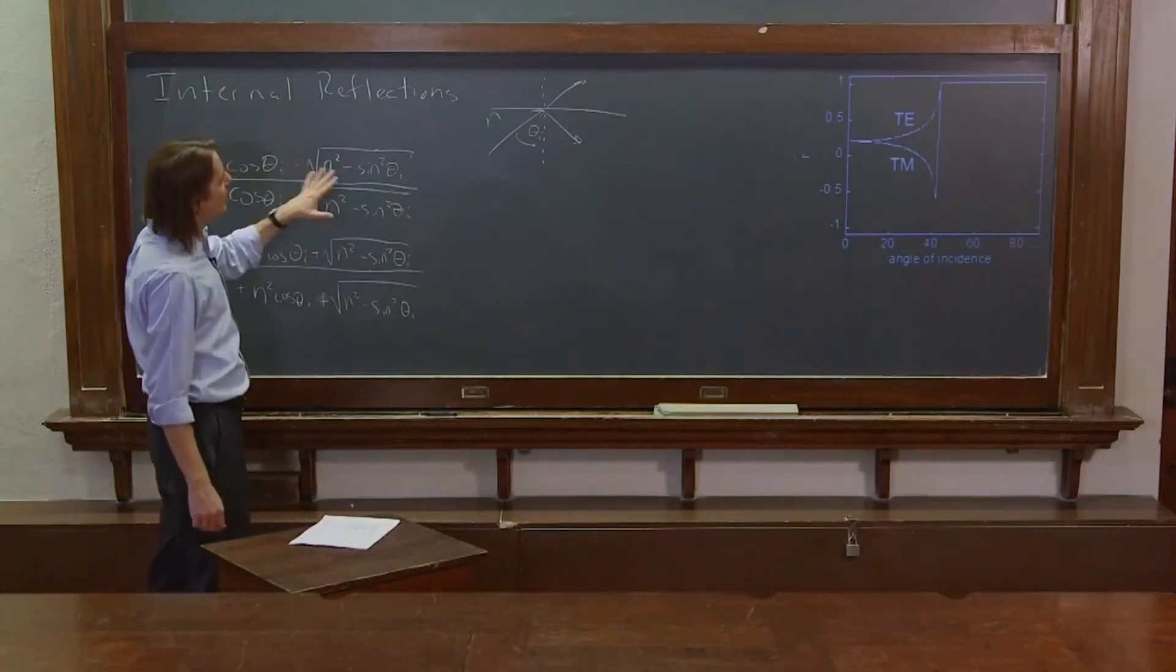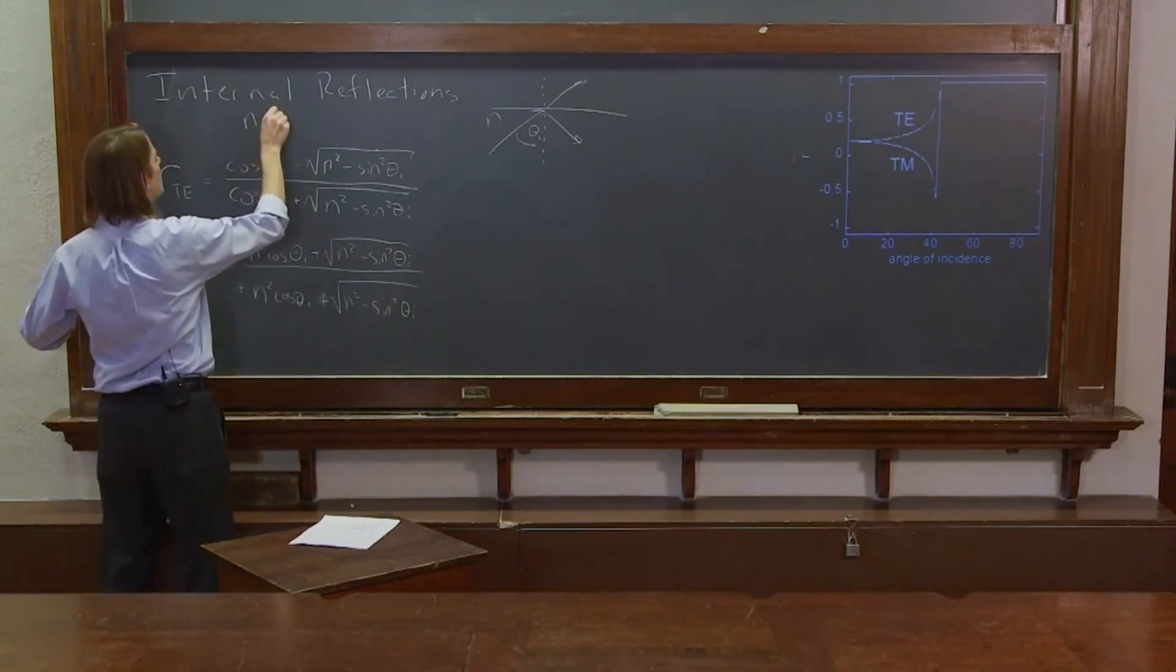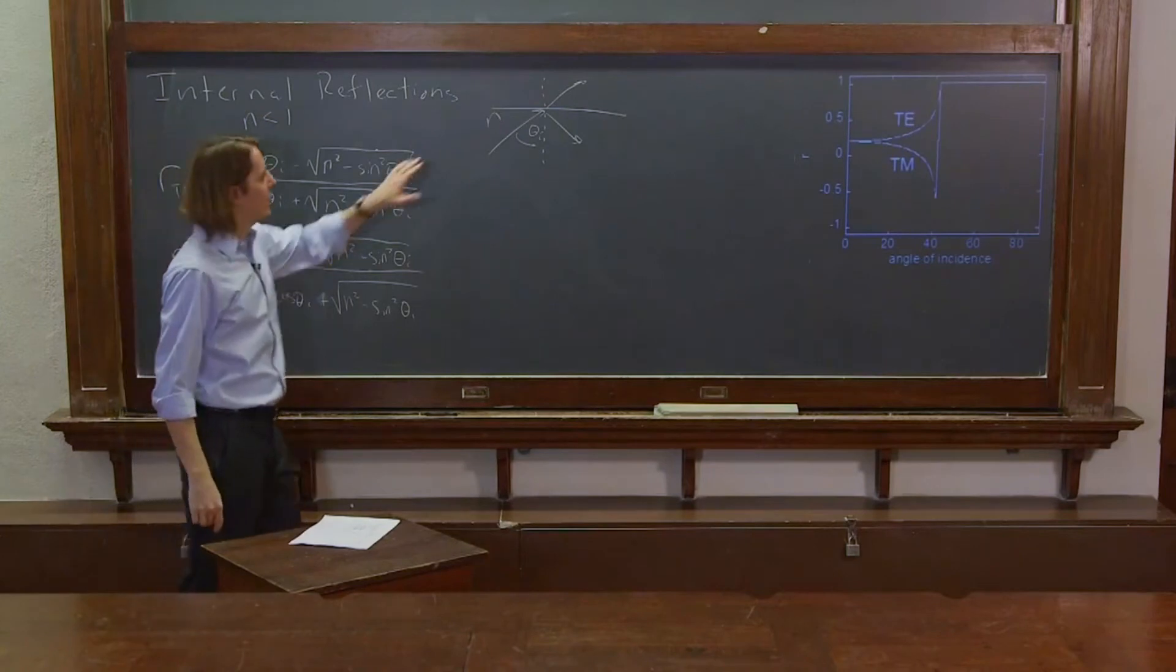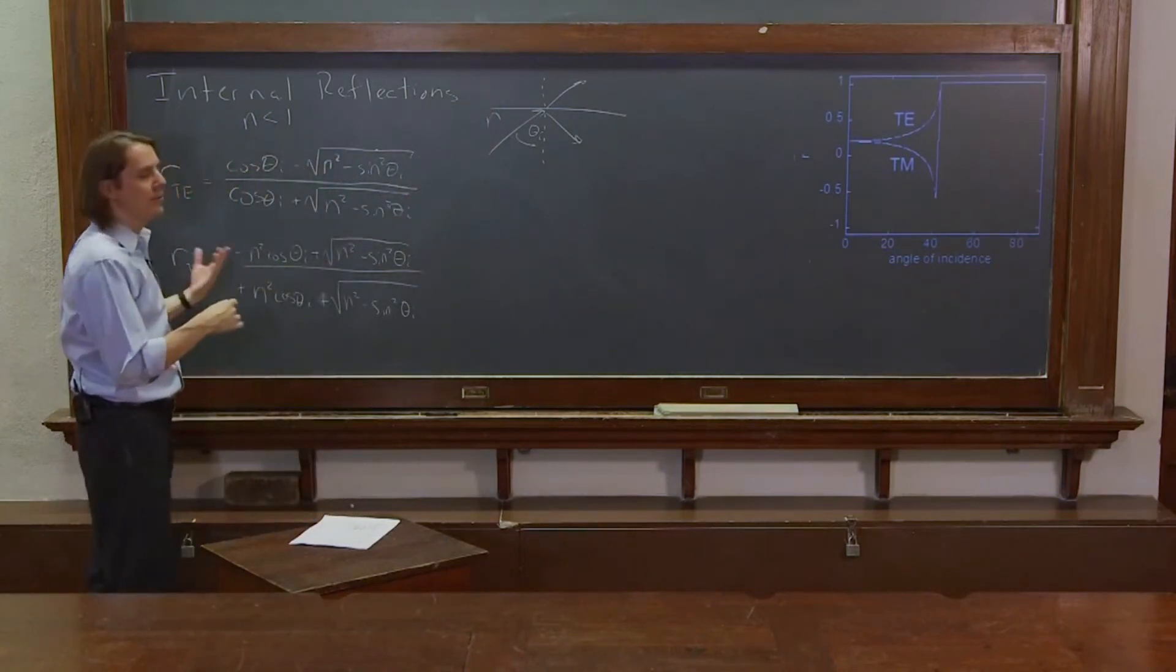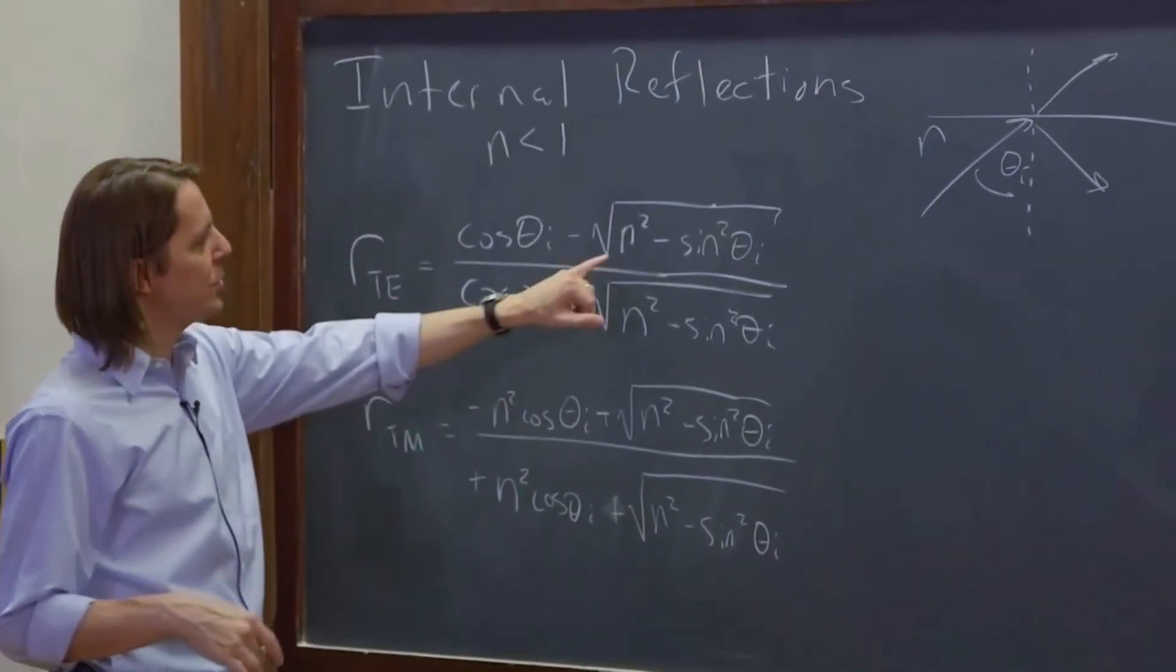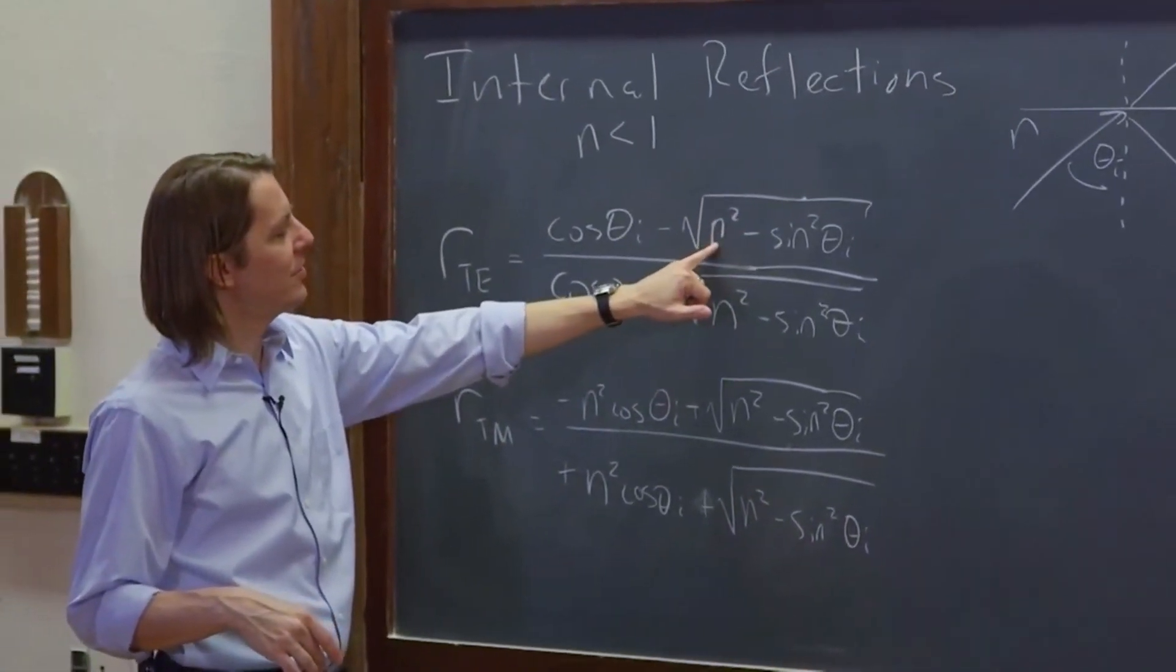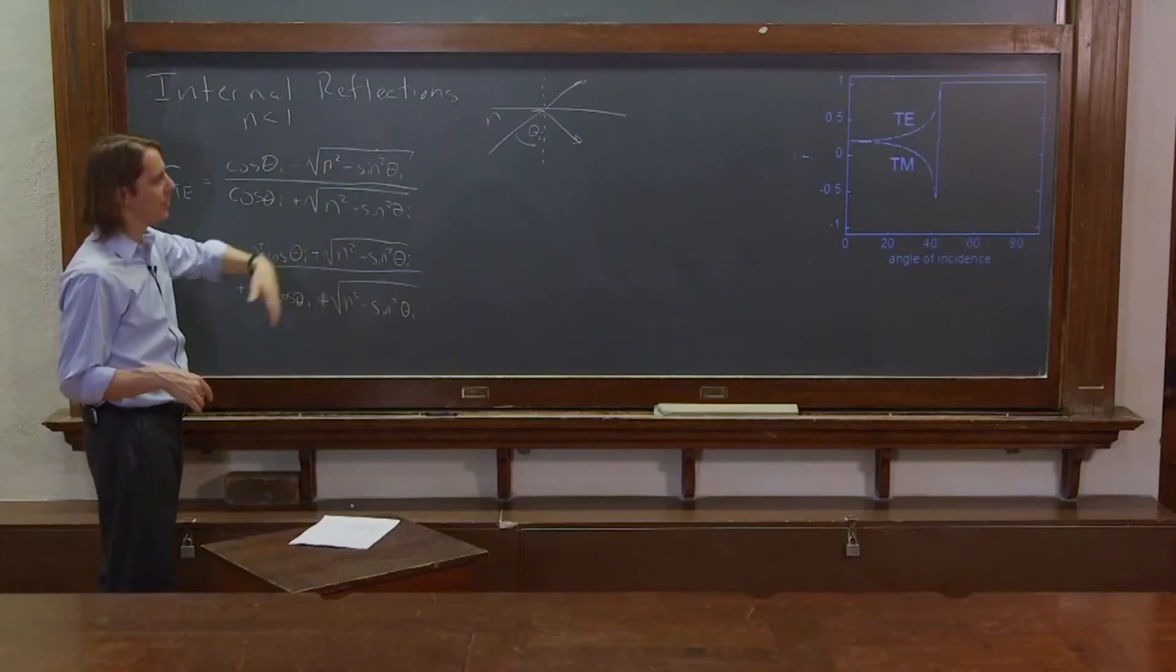But we had this interesting case where we're dealing with n less than 1. Here we say the glass is 1.5, the air is 1, but the relative index that you plug into these formulas is now 1 over 1.5, which of course makes this less than 1, and sine theta i can be as big as 1. So for some angles, this will be complex.